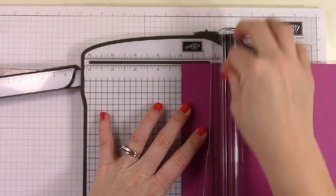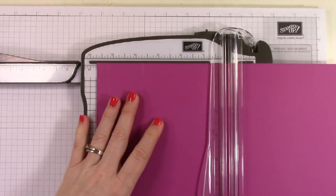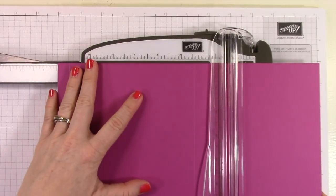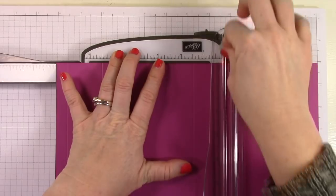And now I'm going to score at two inches, and then at six inches, and finally at seven and a half inches. Then this is all being scored on the 11 and a half inch side.